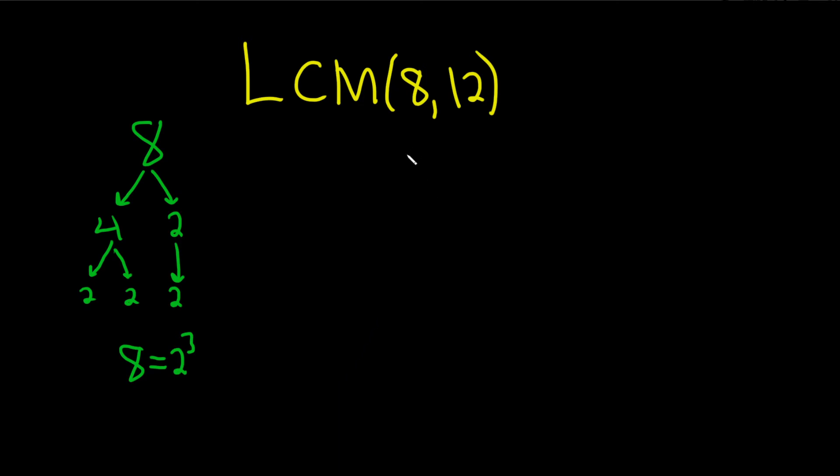What about 12? Let's do that one. 12 is 4 times 3, and 4 is 2 times 2. And then you just bring down the 3. So it'll be 2 squared, because there's two 2s, times 3.